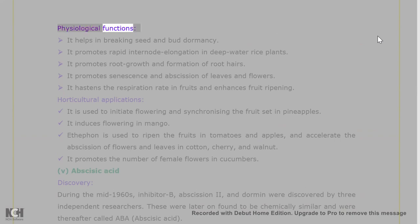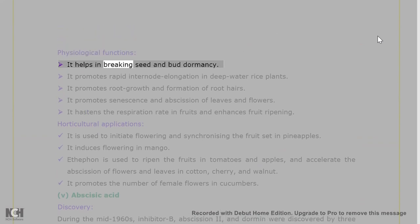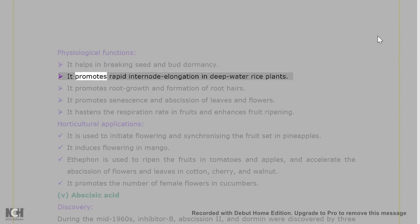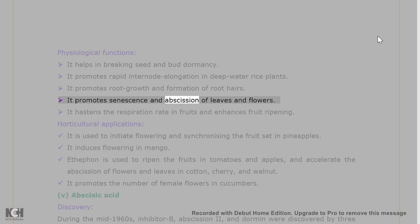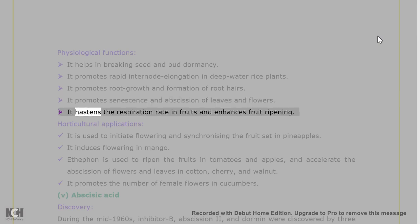Physiological functions of ethylene: it helps in breaking seed and bud dormancy. It promotes rapid internode elongation in deep water rice plants. It promotes root growth and formation of root hairs. It promotes senescence and abscission of leaves and flowers. It hastens the respiration rate in fruits and enhances fruit ripening.